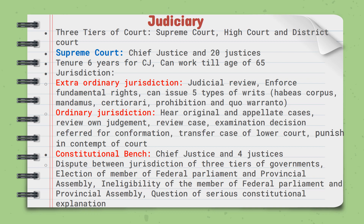The five writs are: habeas corpus, mandamus, certiorari, prohibition, and quo warranto. Under ordinary jurisdiction, the Supreme Court can hear original and appellate cases, review judgments, examine and decide review cases, refer cases for confirmation, transfer cases from lower courts, and punish for contempt of court. These are the ordinary jurisdictions of the judiciary.